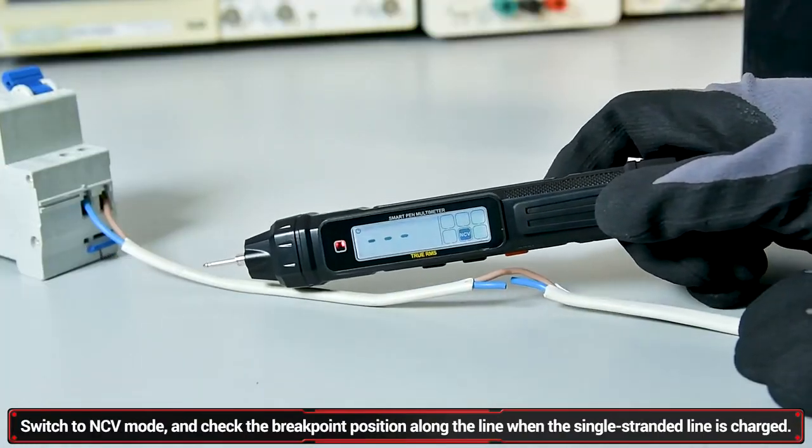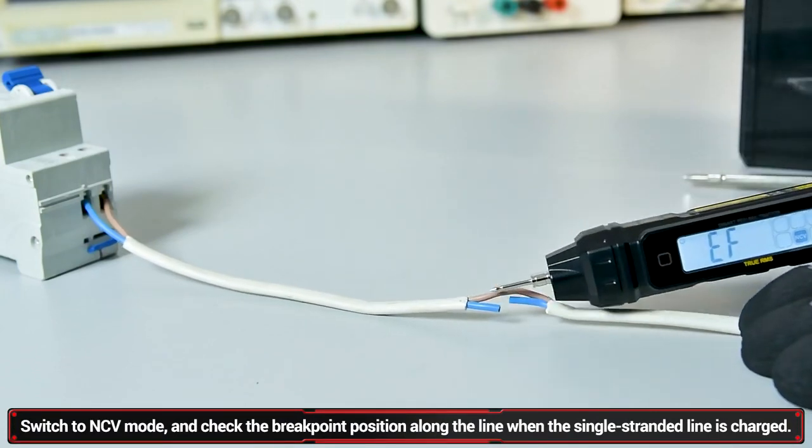Line breakpoint investigation: can be used to detect a live wire situation or offline breakpoint location.